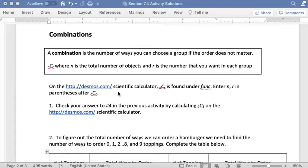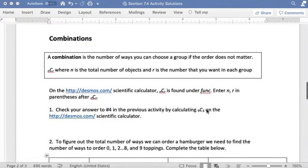On the Desmos.com scientific calculator, we have a button for nCr and we're going to use that in this section. The way that button works is that we enter n comma r in parentheses after we hit the nCr key. First we're going to check our answer to number 4 in the previous activity by calculating 9C3 on the Desmos.com scientific calculator.